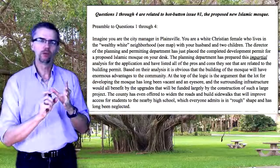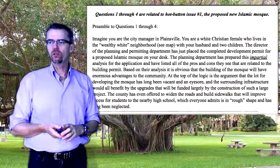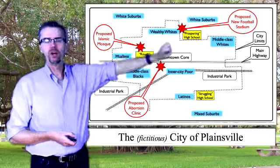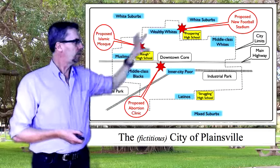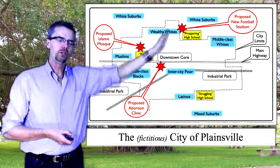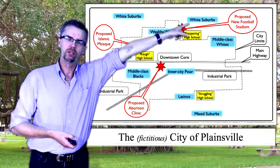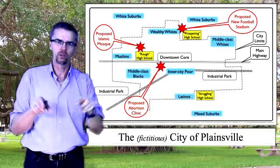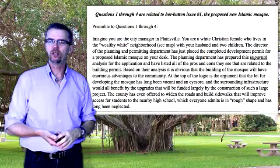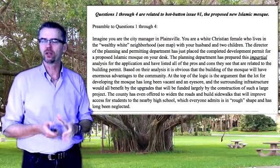Questions one through four are related to the Islamic mosque. Imagine you are the city manager in Plainsville — a white Christian female who lives in the wealthy white neighborhood, which is up here at the top. The Islamic population primarily lives over here, and they want to build a mosque in between the two populations. The director of the planning and permitting department has just placed the completed development permit for a proposed Islamic mosque on your desk.